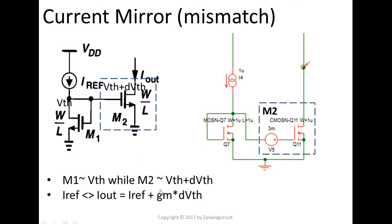But in reality, first of all, we made assumption here that M1 and M2 have the exact same threshold. But in reality, even though M1 and M2 in the layout, we put them very close side by side, Vth of these two transistors could be different. Let's say one is Vth, the other one is Vth plus a delta. So with that mismatch, what exactly is Iout going to be? Iout is going to be equal to Iref plus a small delta, which is gm multiplied by delta Vth.